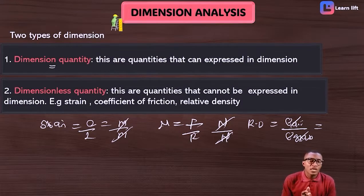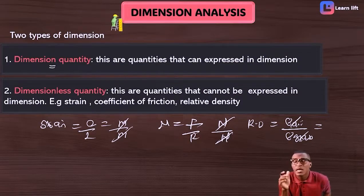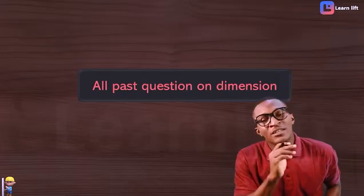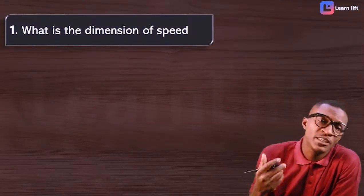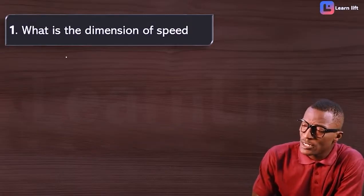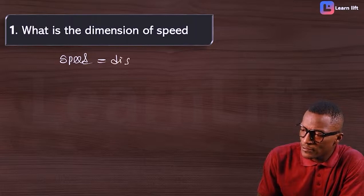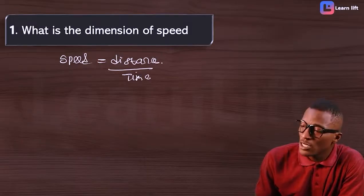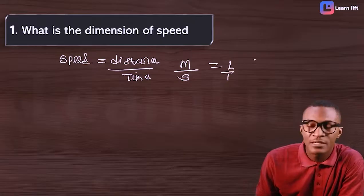Dimensionless quantities are quantities that have no units — any quantity that cannot be expressed in dimension is called dimensionless. Now let's focus on dimension questions from past JAMB papers. The first question: what is the dimension for speed? The formula for speed is distance over time. Distance is measured in meters and time in seconds, so that's meters over seconds.